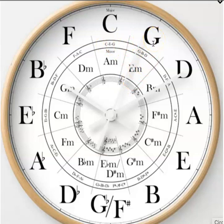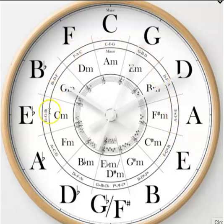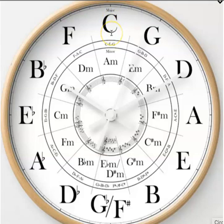The G major chord is made up of G, B, and D. The D major chord is D, F-sharp, and A. The A major chord is A, C-sharp, and E — and you can see that right here on the clock. Most circle of fifths diagrams don't include this inner circle showing you how to make a chord. It's the first, the third, and the fifth that make up every major chord. Those three notes are called a triad.